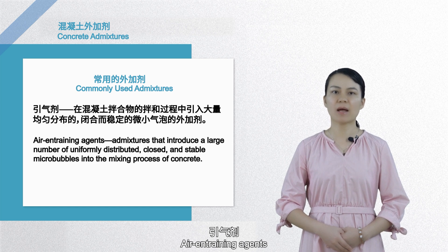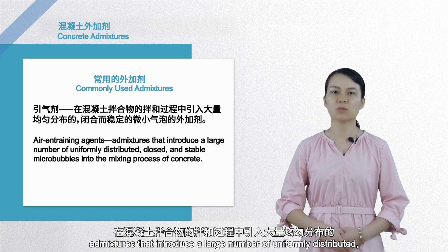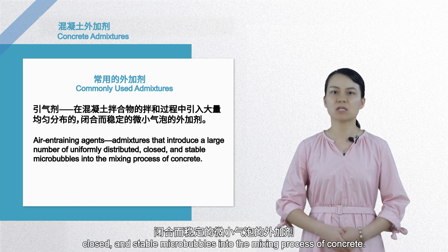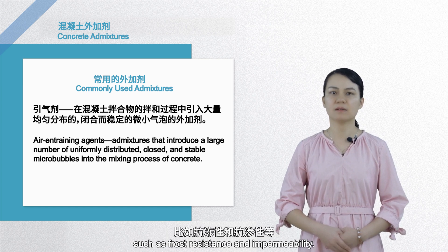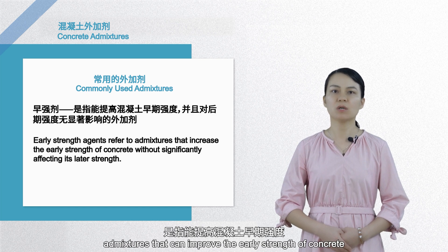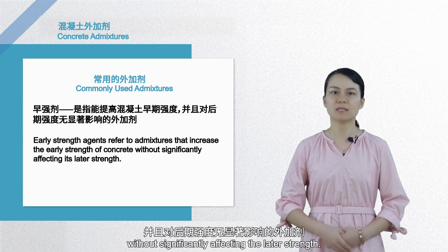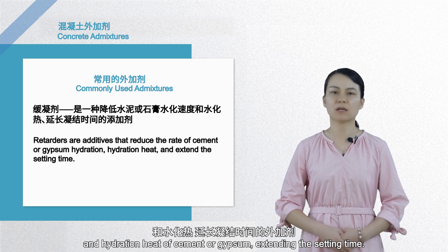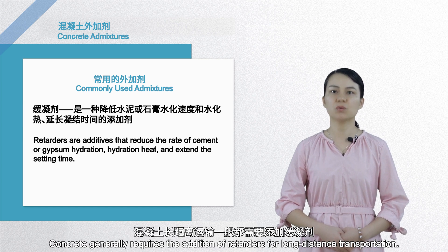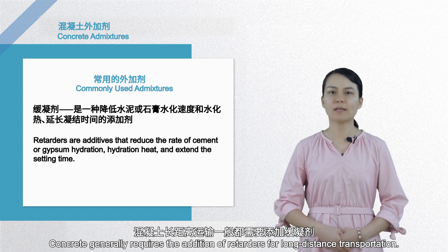Air-entraining agents are admixtures that introduce a large number of uniformly distributed, closed, and stable micro-bubbles into the concrete during mixing. Air-entraining agents generally improve the durability of concrete, such as frost resistance and impermeability. Early strength agents are admixtures that can improve the early strength of concrete without significantly affecting the later strength. Retarders are admixtures that reduce the hydration rate and hydration heat of cement or gypsum, extending the setting time. Concrete generally requires the addition of retarders for long-distance transportation.